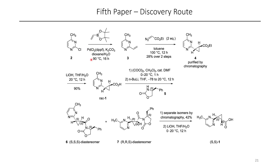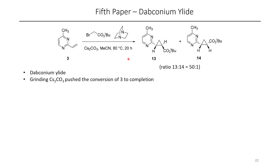Cross-coupling with vinyl B-pin afforded the vinyl pyrimidine 3. This could then be cyclopropanated using a diazoester, which could be purified via column chromatography. Diazo compounds are often something people want to avoid, especially in medicinal chemistry, so the authors opted to find an alternative synthesis — they're also somewhat energetic. After screening lots of conditions, the authors found that this DABCO-nium ylide worked quite well.